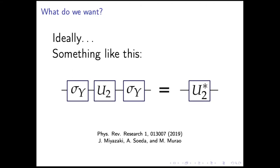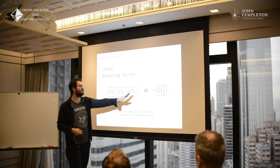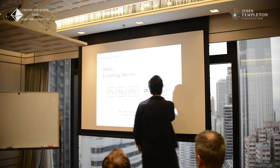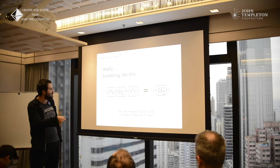So we would like something like this picture here, representing a quantum circuit. Time flows from left to right. This U2 represents a qubit unitary operation. The sigma y — it's the Pauli sigma y. It turns out that for any qubit unitary operation, if before you do a sigma y and after you do a sigma y, this whole block can be understood as the complex conjugate of the unitary. And it's very simple.